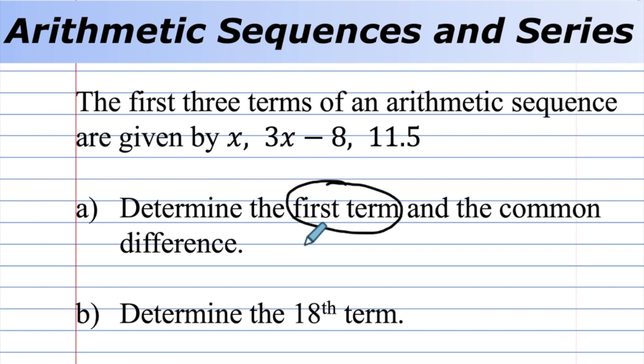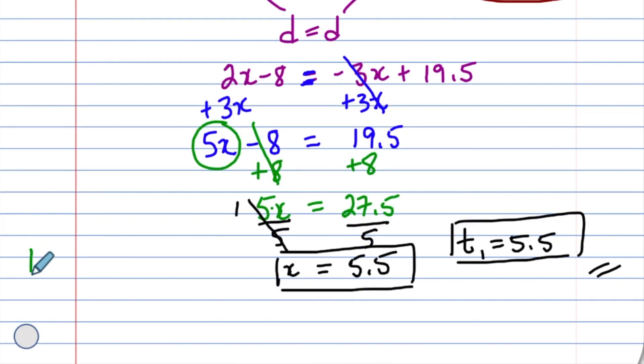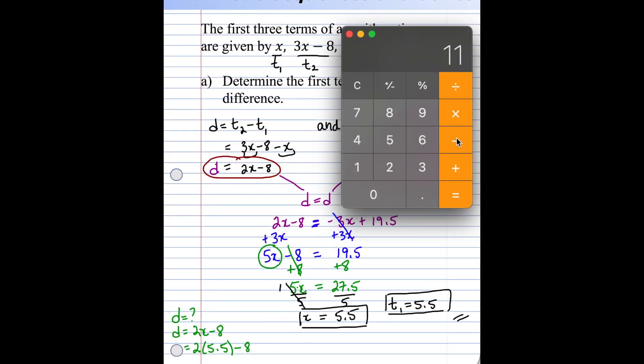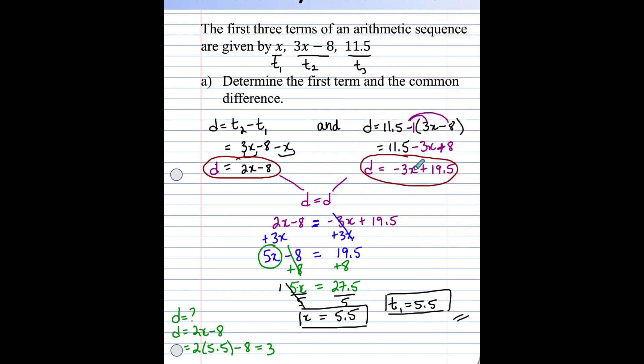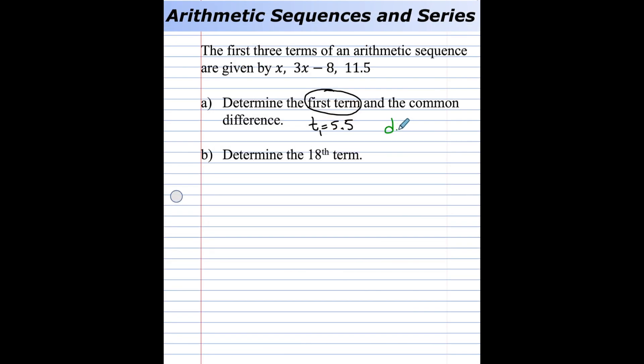We found the first term, t₁ is 5.5, but now we have to find the common difference. We could use this equation to find d, and also this equation to find d. Let's use this one first. We're looking for d. d is 2x minus 8, 2 times 5.5 minus 8. 2 times 5.5 minus 8 equals 3. If we put 5.5 here, will we get the same d? Let's try it. We have 3, negative 3 times 5.5 and then add 19.5, and it's 3. The common difference is 3.